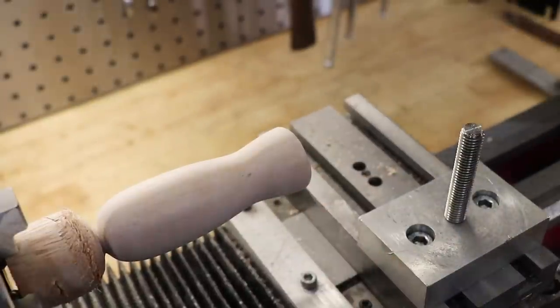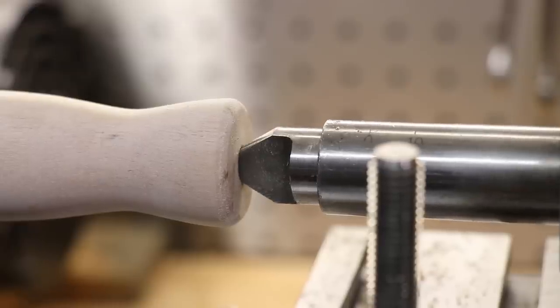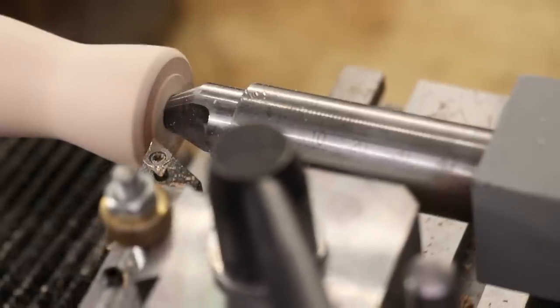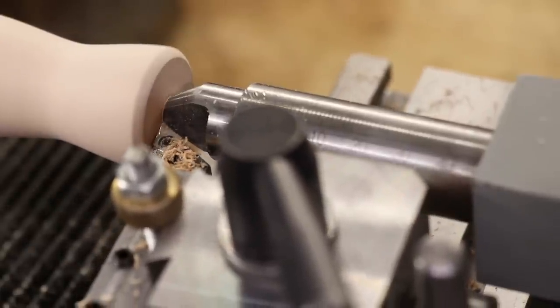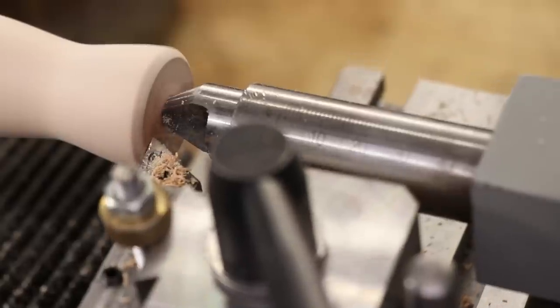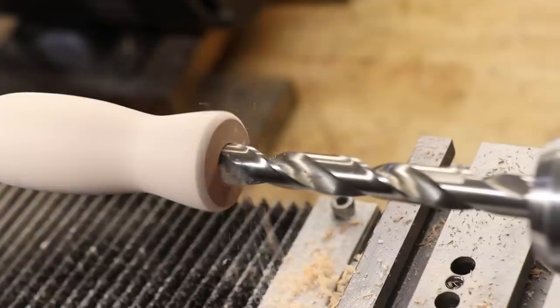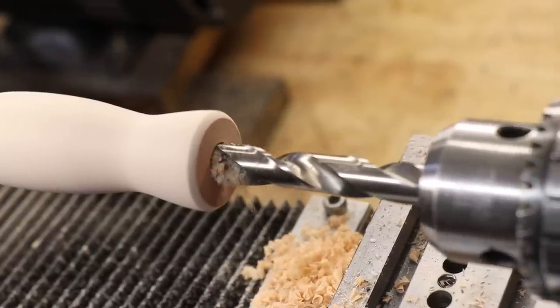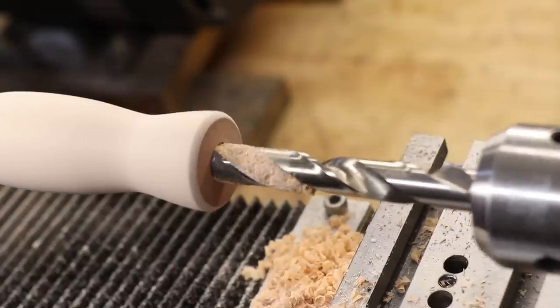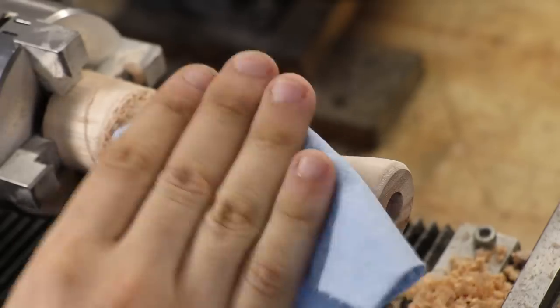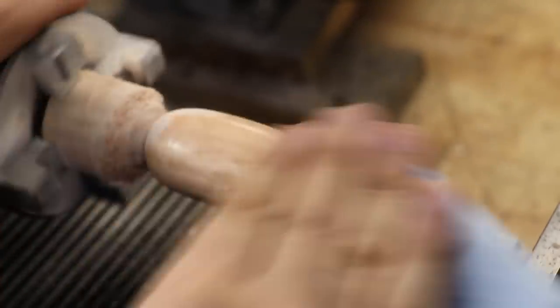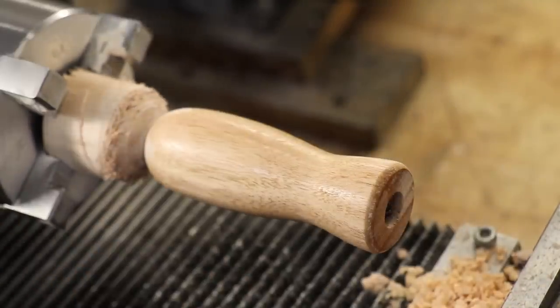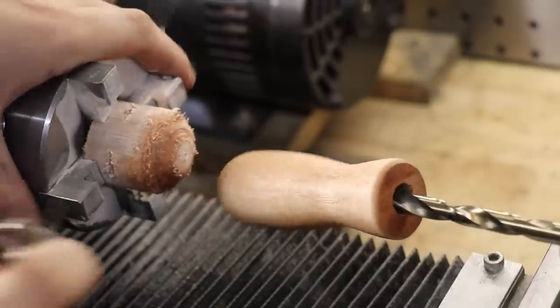The end is a little bit rough, so I'll use the half center to face off the end and clean it up. Finally, I'll give it a quick oiling using a light mineral oil, and that's the first part done.